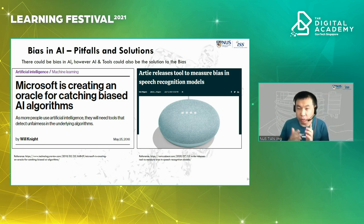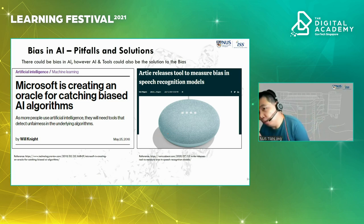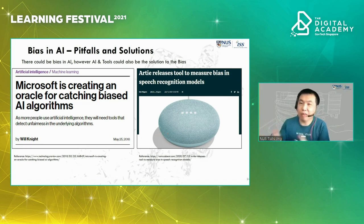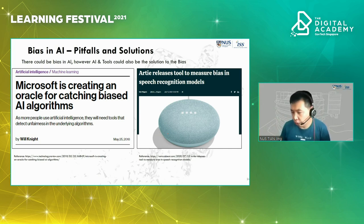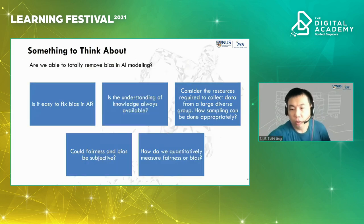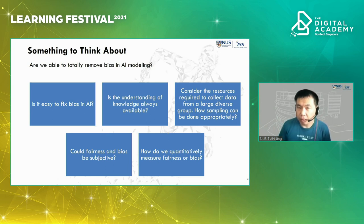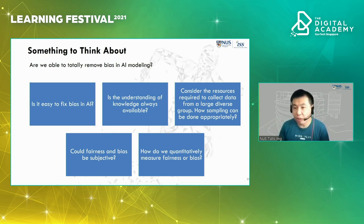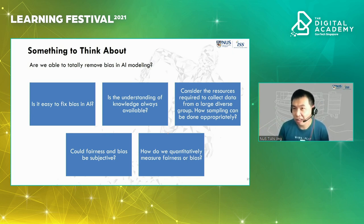Fortunately, we can apply AI to address AI bias issues. Big players have already started applying AI to address bias in speech recognition. Open questions remain: Is it easy to fix bias in AI? Is the knowledge always available? How do we get a good sampling rate from a large diverse group? Is fairness of bias subjective or objective, and how do we cognitively measure it?